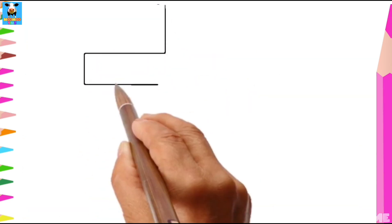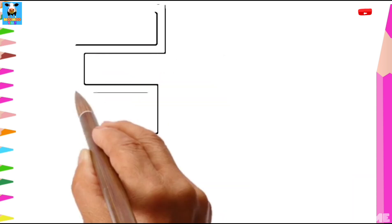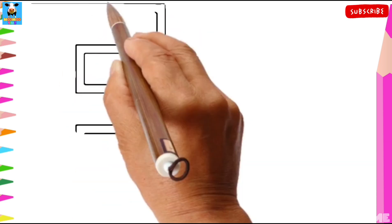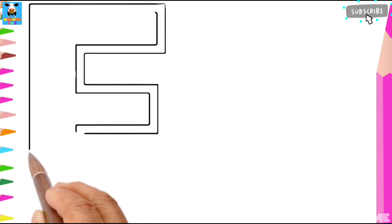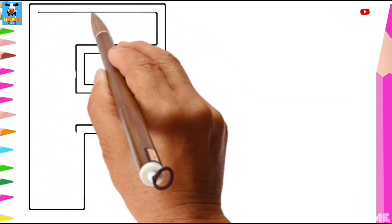Can you guess the next alphabet? Yes, correct. This is F. F for Fish.